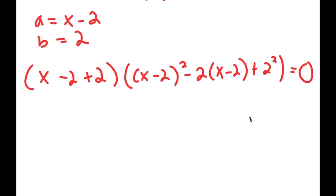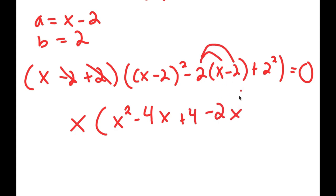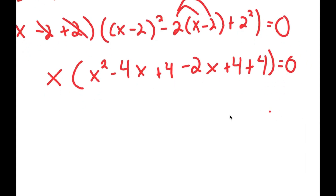We can simplify this: negative 2 and positive 2 cancel out, so I get x times (x minus 2)². Now (x minus 2)² is the same thing as x² minus 4x plus 4. Then negative 2 times (x minus 2) — I distribute the negative 2: negative 2 times x is negative 2x, and negative 2 times negative 2 is positive 4. And finally I have plus 2², which is equal to 4.